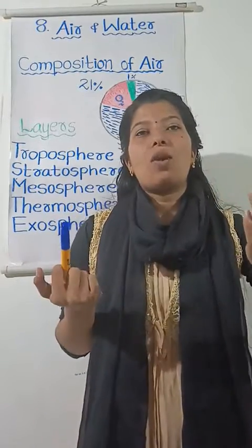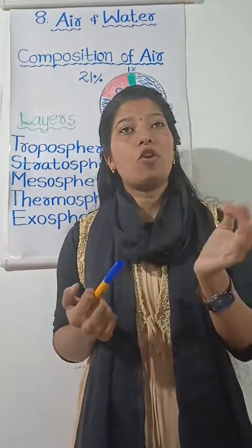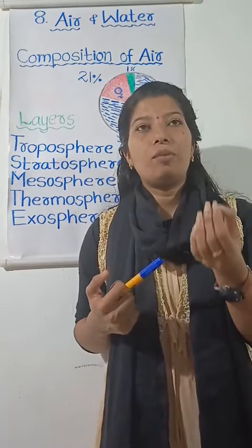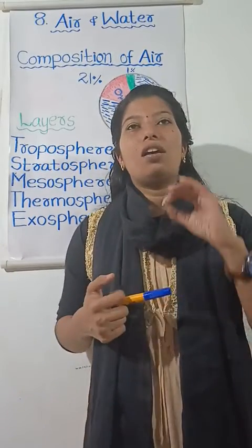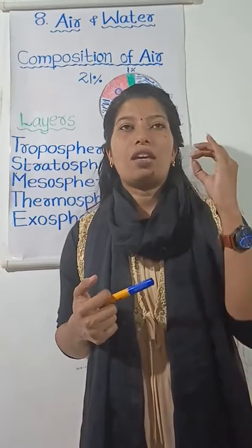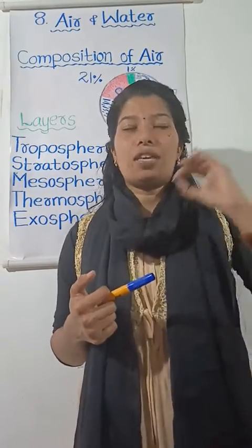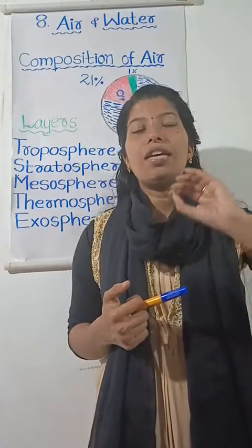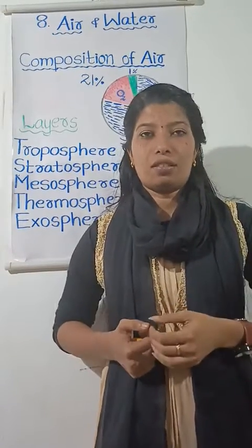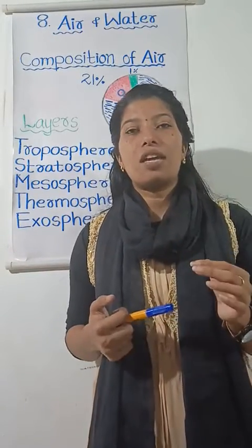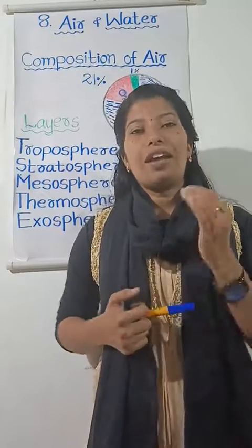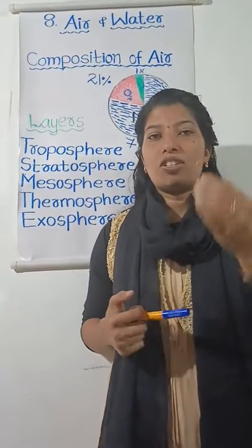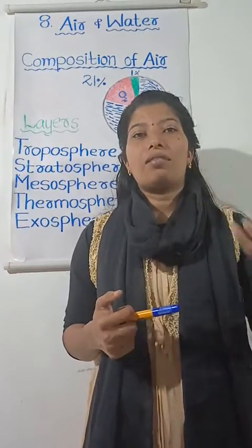You know, air is all around us in our environment. We take it in when we breathe — we take it into our body every second we breathe. And this air consists primarily of two main gases: oxygen and nitrogen, in addition to small amounts of other gases.